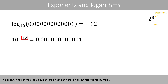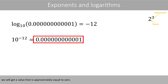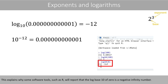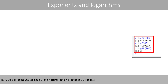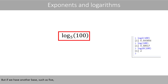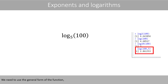This means that if we place a super large number, or an infinitely large number in the exponent, we will get a value that is approximately equal to 0. This explains why some software tools, such as R, will report that the log base 10 of 0 is a negative infinity number. In R, we can compute the log base 2, the natural log, and log base 10 like this. But if we have another base, such as 5, we need to use the general form of the function, where we put the base here.